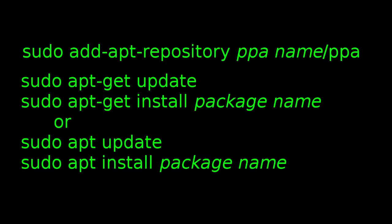If you install this in your system and update your package list, your system will use this package in preference to an older package. The general syntax is: sudo add-apt-repository, and then the PPA name — you can substitute the actual name for what I show in italics, slash PPA.